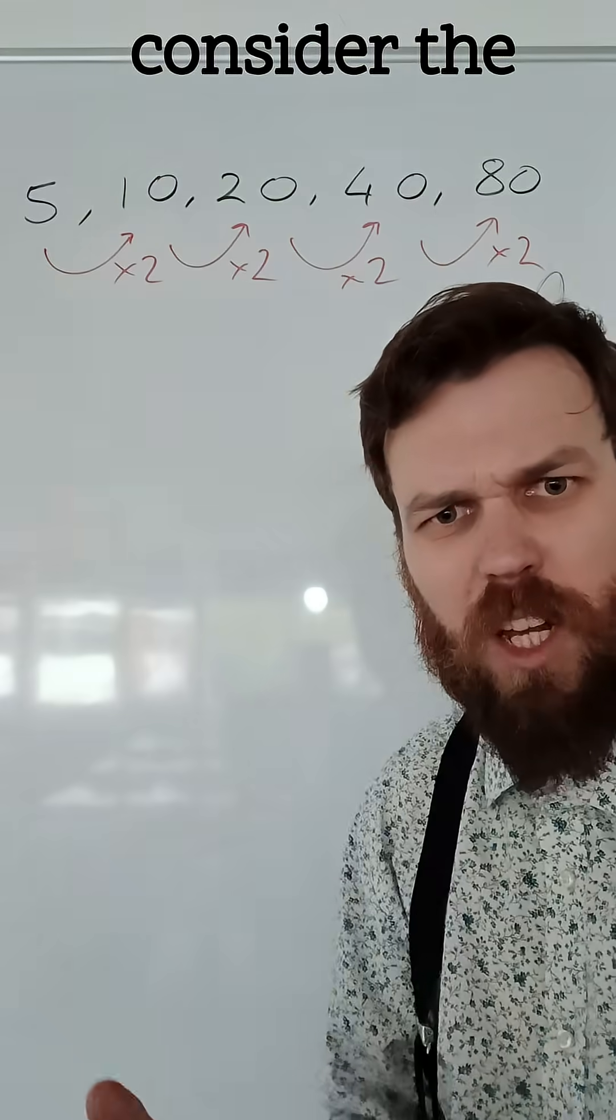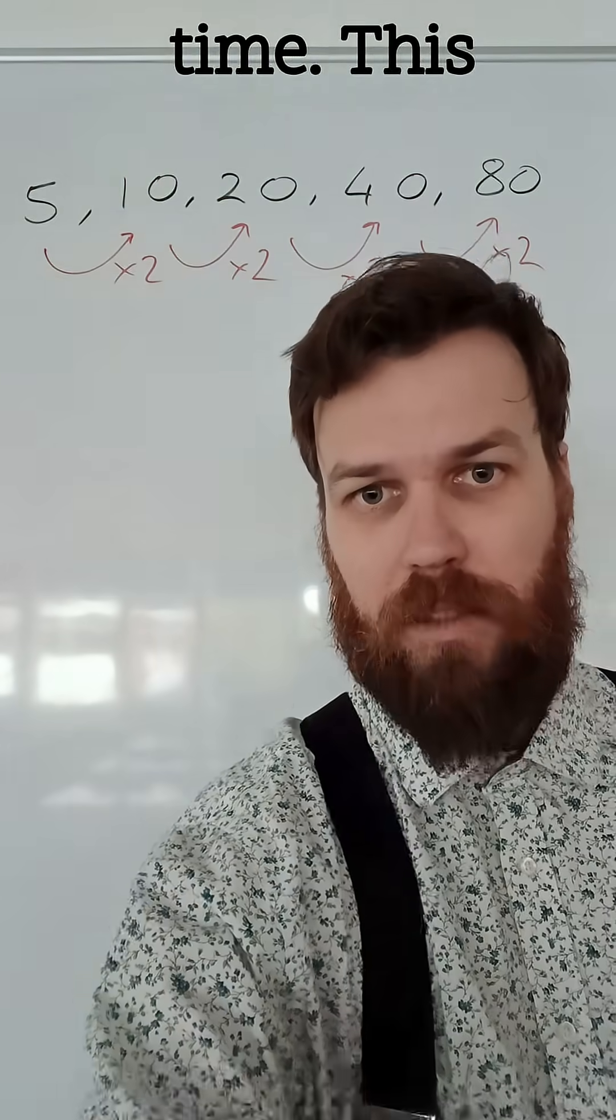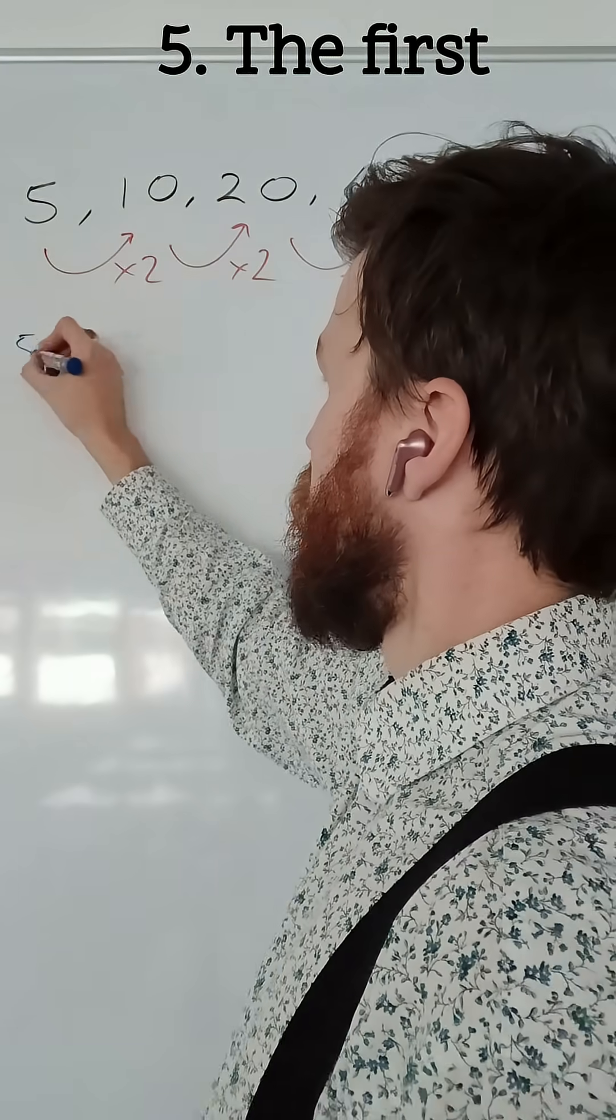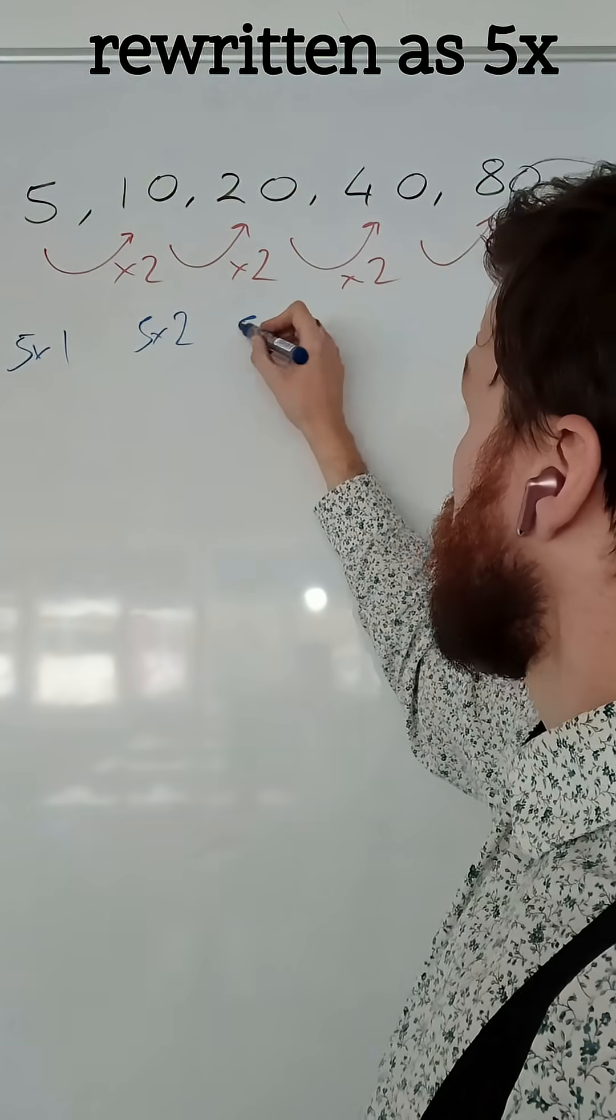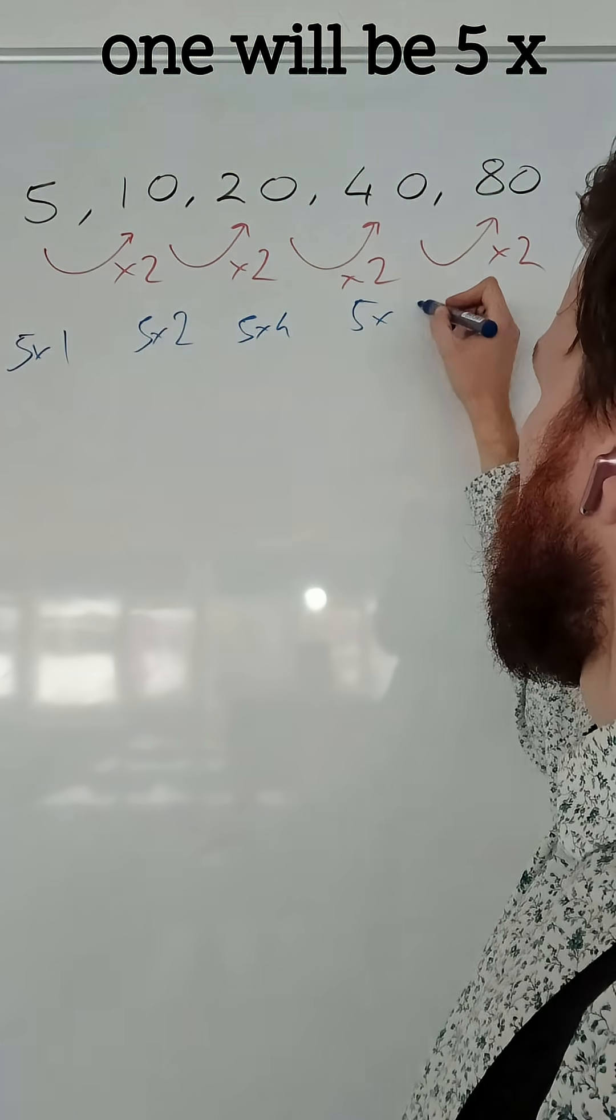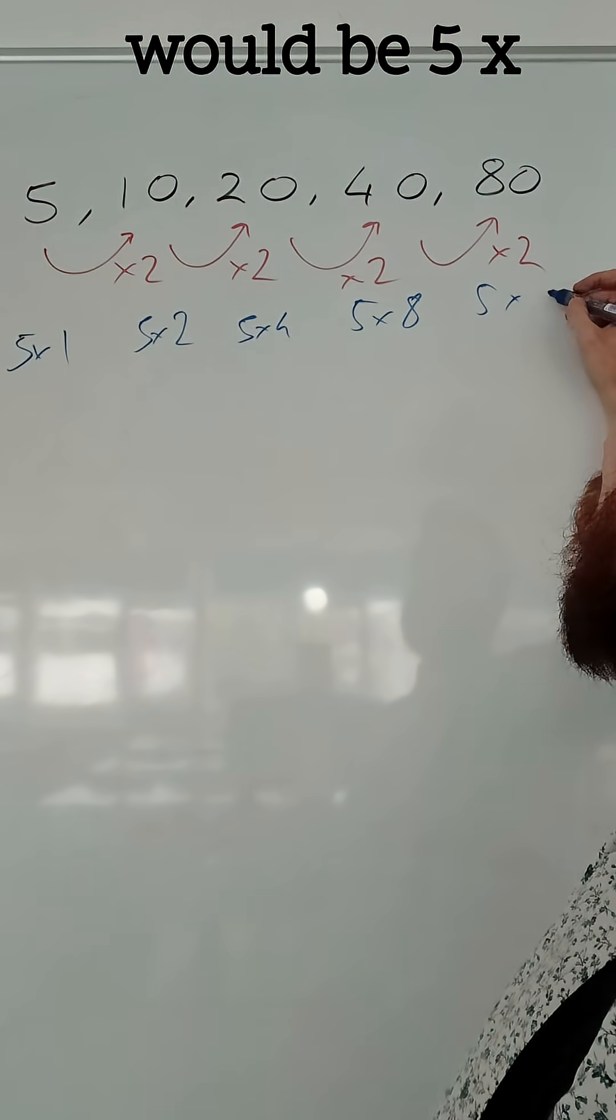Now, what I need to do is consider the first term every single time. This could be rewritten as 5, the first term, times 1. And this could be rewritten as 5 times 2. And this could be rewritten as 5 times 4. And this one would be 5 times 8. And this one would be 5 times 16.